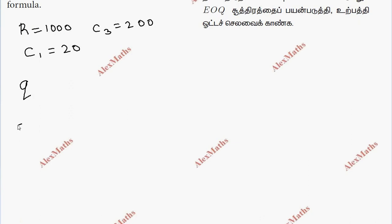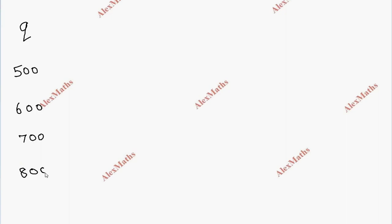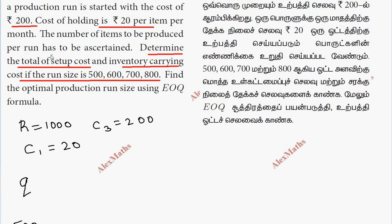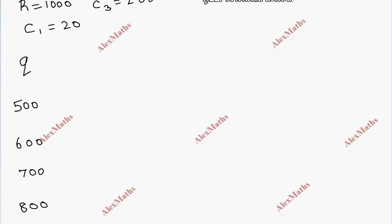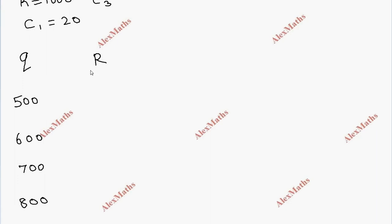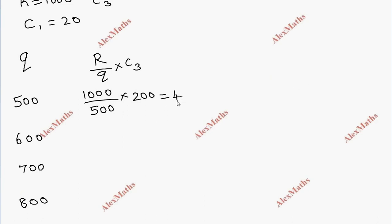So the quantities are 500, 600, 700, 800. The setup cost formula is R divided by Q into C3. R is 1000, C3 is 200. For Q = 500, you get 400. For 1000 divided by 600 into 200, you get a value of 333.